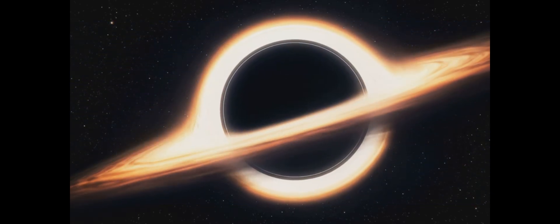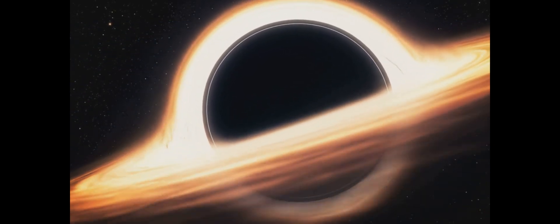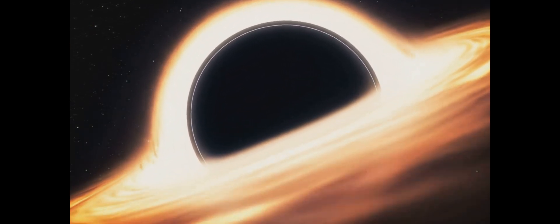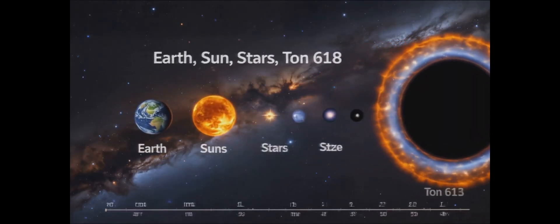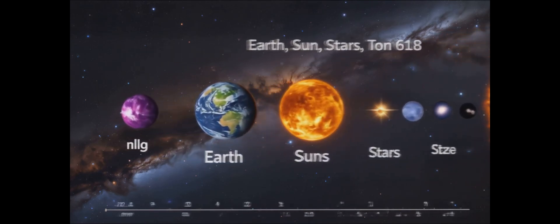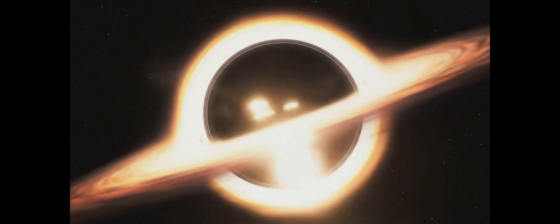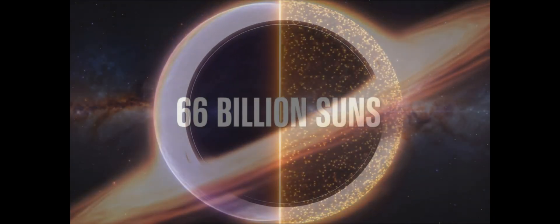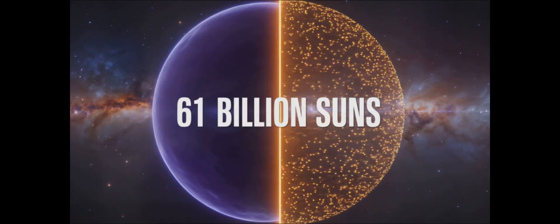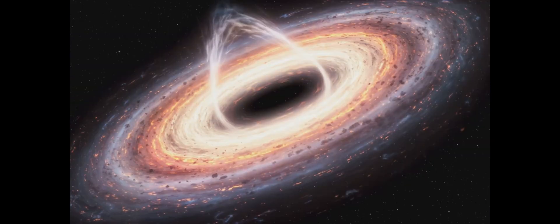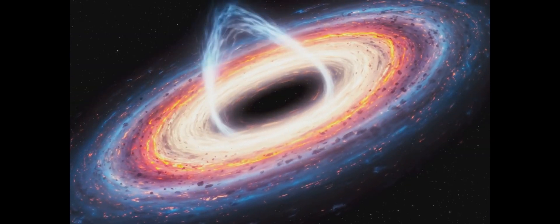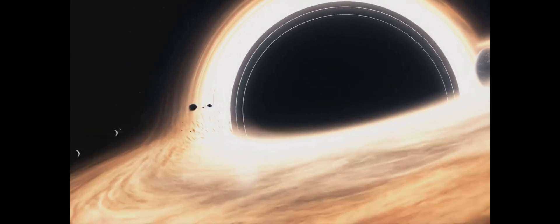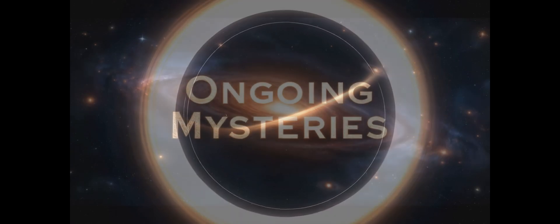Among the pantheon of black holes, some stand out for their sheer scale. The current record holder is Ton 618, an ultra-massive black hole with a mass estimated at 66 billion times that of our sun. It's a cosmic giant that challenges our understanding of how such enormous black holes could form. Imagine a black hole so large that it could swallow our entire solar system in an instant and barely notice the meal. It's a sobering thought, isn't it?